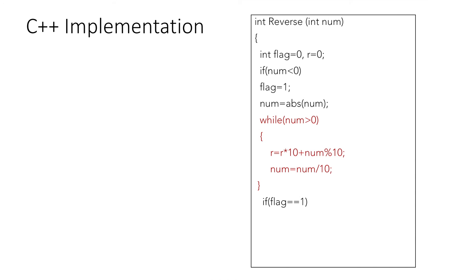After our loop ends we will check if the flag is set to 1, which means that the number was initially negative, then we will multiply r with minus 1 to make it negative, and finally we will return r which is the reverse number.